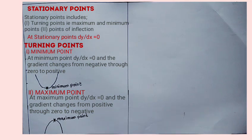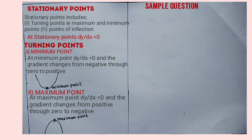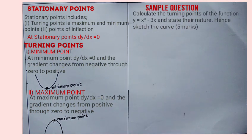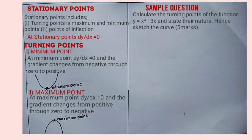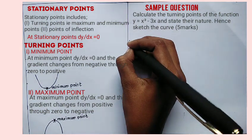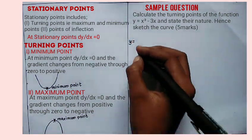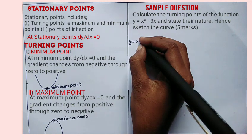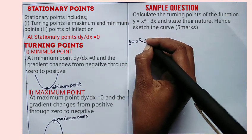We are going to look at a question and an example so that we can elaborate on the concept. The question says: calculate the turning points of the function y is equal to x cubed minus 3x, and state the nature. Hence, sketch the curve. So you are told y is equal to x cubed minus 3x.